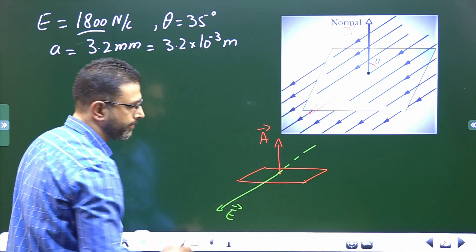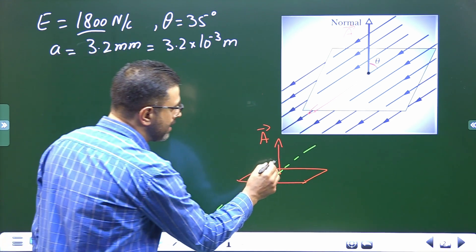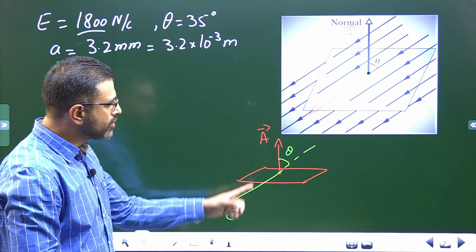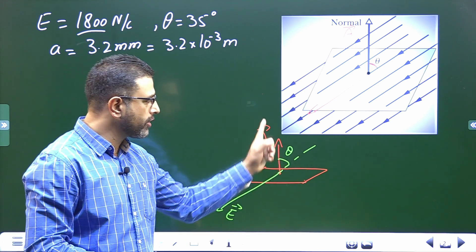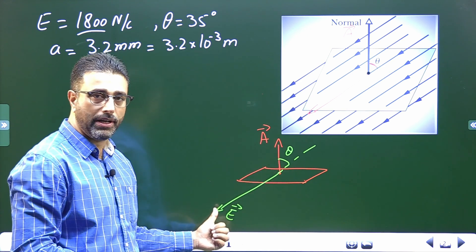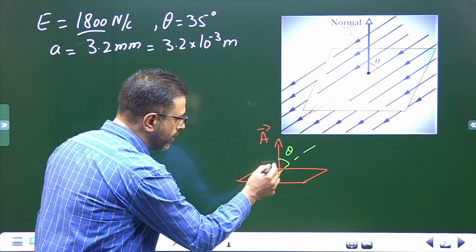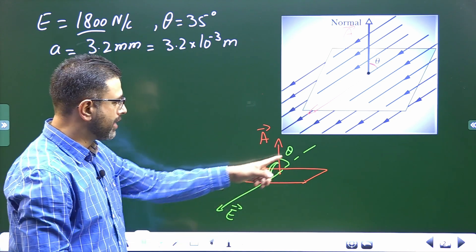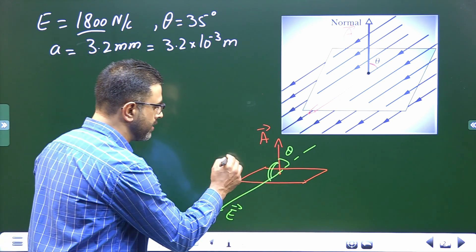This angle is given, that is theta, which is 35 degrees. But that is not the angle between the direction of area and direction of electric field. Angle between the direction of area and direction of electric field is this angle, which is 180 minus 35 degrees.